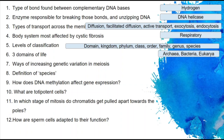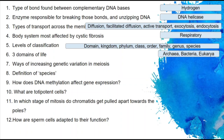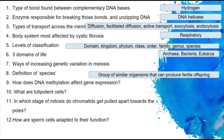Ways of increasing genetic variation in meiosis — it should have been crossing over and independent assortment. Definition of species: groups of similar organisms that can produce fertile offspring — the 'produce fertile offspring' part is really important. DNA methylation decreases gene expression. If you add a methyl group to the cytosine, the RNA polymerase can no longer bind because it's the wrong shape, so you cannot make mRNA and you cannot express the gene.